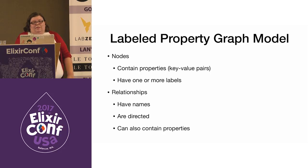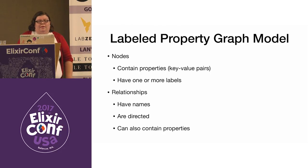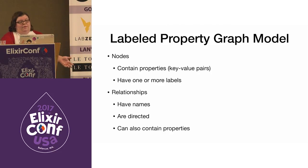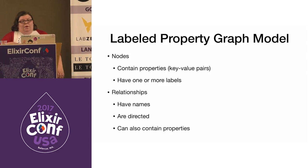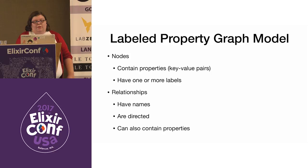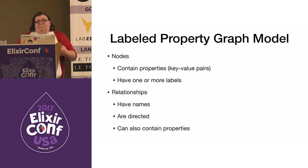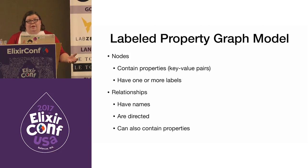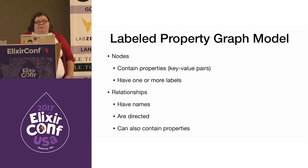The model used is called a labeled property graph model, and it has a few characteristics. Nodes contain properties, which can be thought of as key-value pairs, and they have one or more labels attached. Relationships are named and directed; they must have a start and an end node. Relationships can also contain properties, but they're not required.